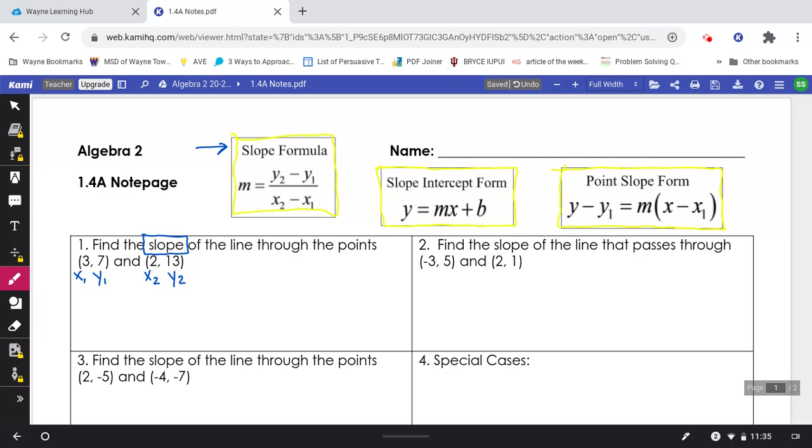Then I'm going to plug it into the formula, y2, 13, minus y1, 7, over x2, 2, minus x1, 3.